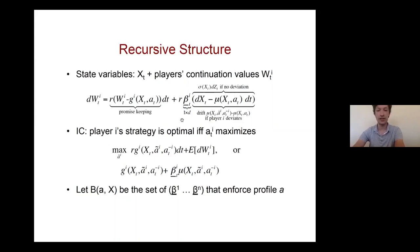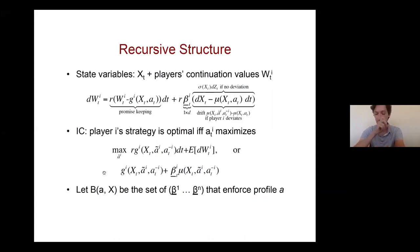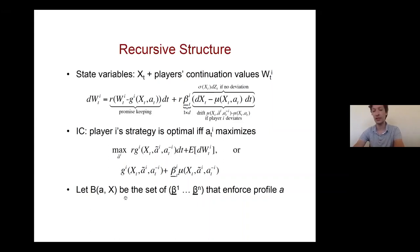Continuation values reflect future expected payoffs and how they change over time. There is a promise-keeping condition: the current continuation value is a weighted average of the current payoff flow and the expectation of the future. Continuation values can also change with signals — this reflects how a continuation value changes in response to a surprise in signals relative to what players expect in equilibrium. This coefficient is the stochastic driver — the sensitivity of continuation values to signals — which is tied to player incentives.